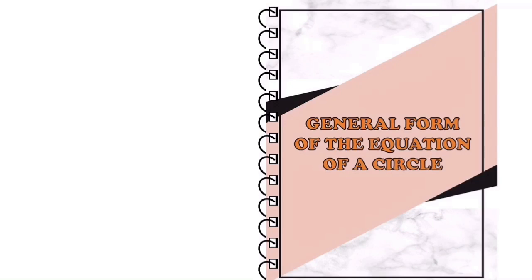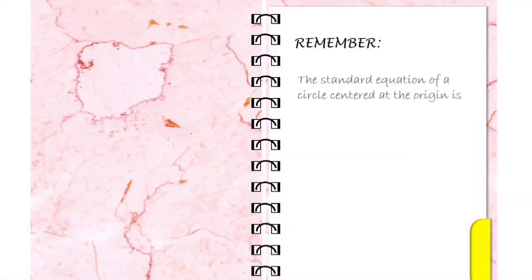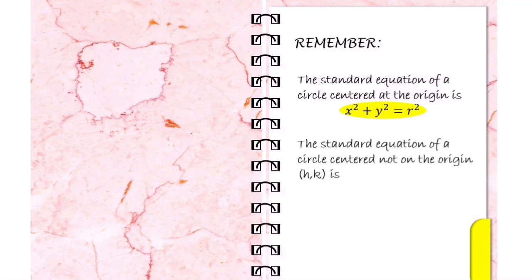Another way of writing the equation of a circle is in general form. Remember, the standard equation of a circle whose center is at the origin is x squared plus y squared equals r squared. But if the center is not located on the origin, we use the equation x minus h squared plus y minus k squared equals r squared.